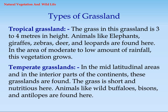Tropical grassland vegetation grows in areas with moderate to low rainfall. Temperate grasslands are found in the mid-latitudinal areas and interior parts of continents. The grass here is short and nutritious. Animals like wild buffalos, bisons, and antelopes are found in temperate grasslands.